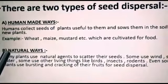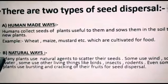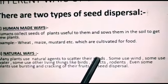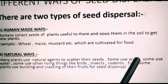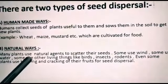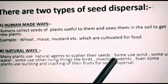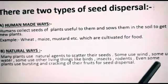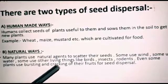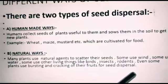The second method is natural methods. In this process, many plants use natural agents to scatter their seeds. Some use wind, some use water, some use other living things like birds, insects, rodents. Even some plants use bursting and cracking of their fruits for seed dispersion.